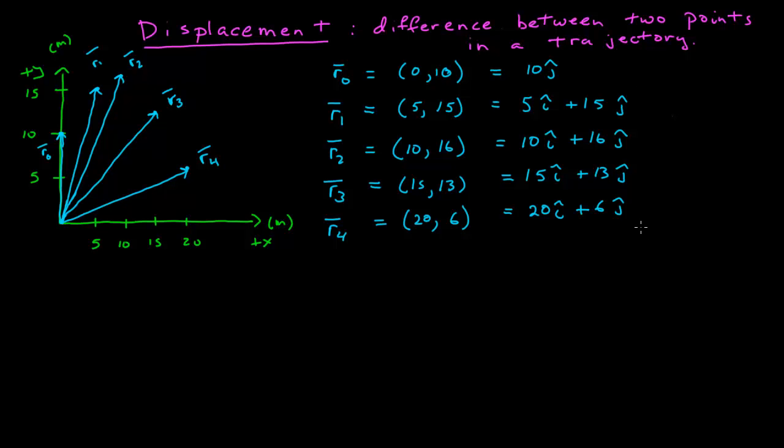In this module, we want to take a look at the displacement. Now, the displacement is simply the difference between two points in a trajectory. So, if I want the displacement between these two points, I want the difference. And I will often call a displacement or a difference as delta r vector. The displacement is also a vector, and I use this delta here to represent the notation as a difference between two vectors.